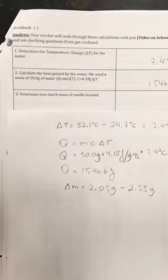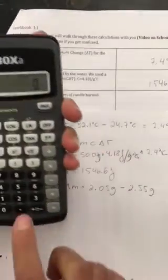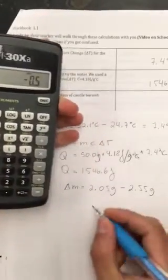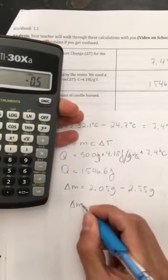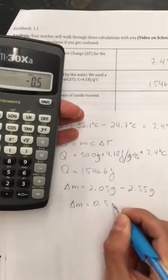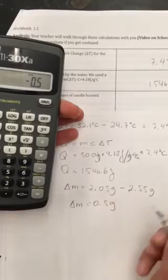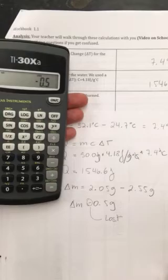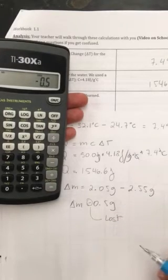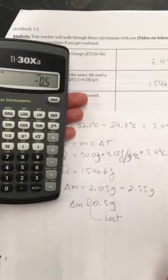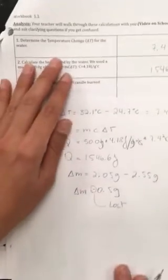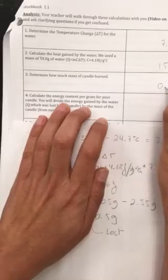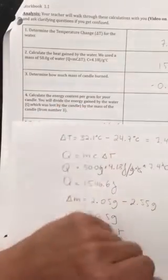So putting that into the calculator I get 2.05 minus 2.55 and I get the changing mass of the candle was -0.5 grams. This negative is just telling you that mass was lost, so you do not need to carry the negative, it just says that it was lost because it was combusted. Then that number goes in here, 0.5 grams, and if you want you can stick with the negative.